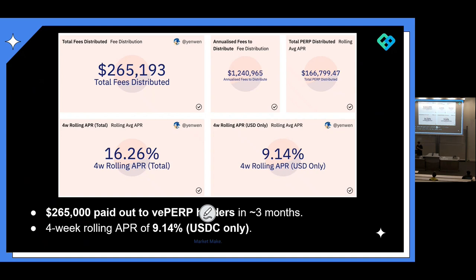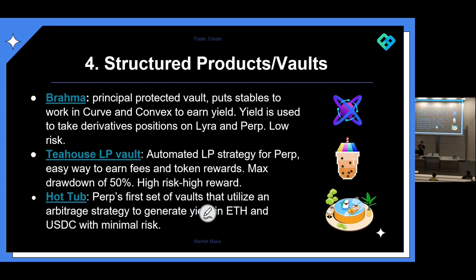The fourth way passive traders can benefit from perpetuals is through structured products and vaults. The first example is Brahma.fi — a principal-protected vault where whatever you deposit, you get back at least what you put in. They put stablecoins to work in Curve and Convex to earn yield, and that yield is used to take on derivative positions on Lyra and Perpetual Protocol. This is pretty low risk, and under the hood you're actually using on-chain derivatives to generate a return on your stables.